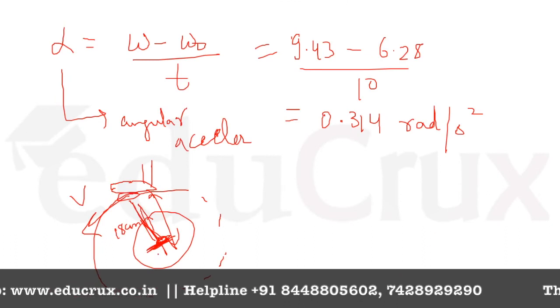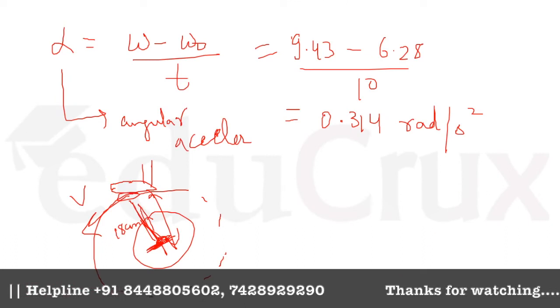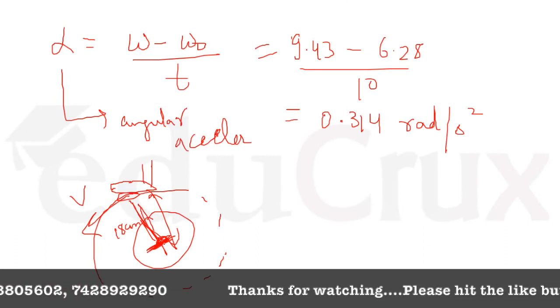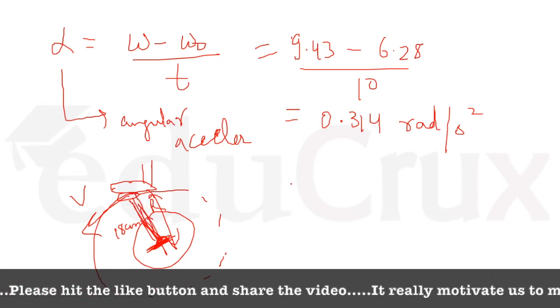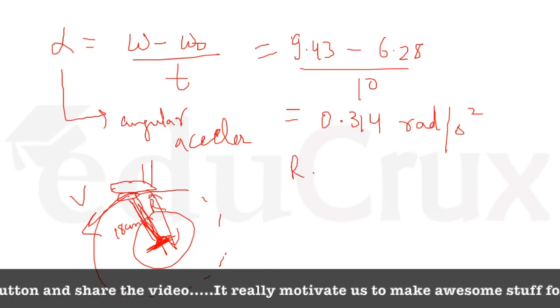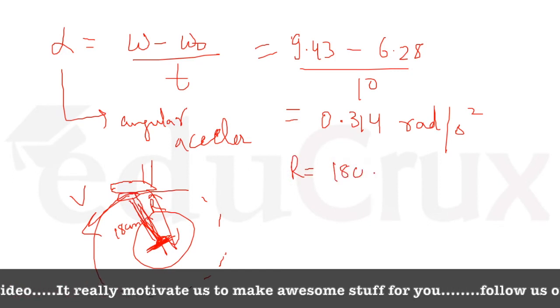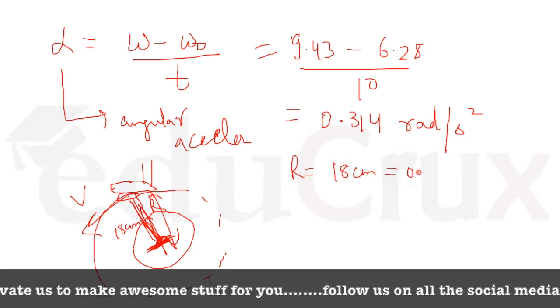So from the center of this spiky sprocket, we will calculate this R. What is this R? We know this R is 18 centimeter, which is equal to 0.18 meter.